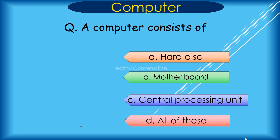Question: A computer consists of A. Hard disk, B. Motherboard, C. Central Processing Unit, D. All of these. Correct answer is D. All of these.